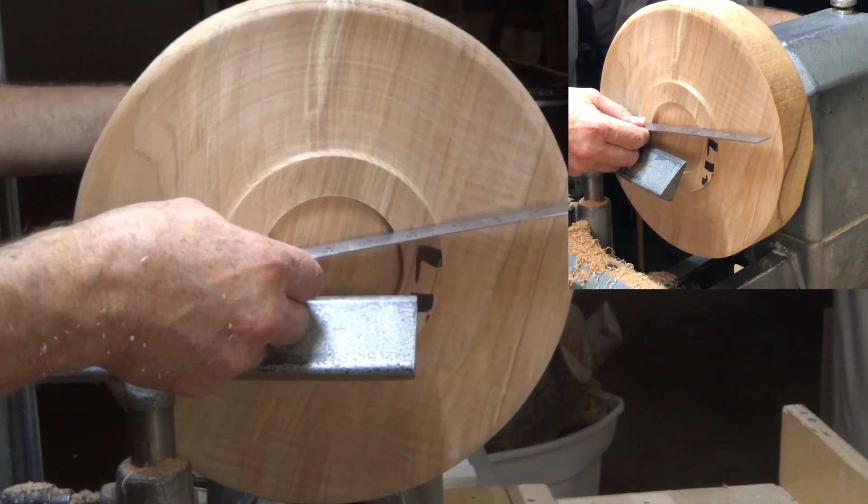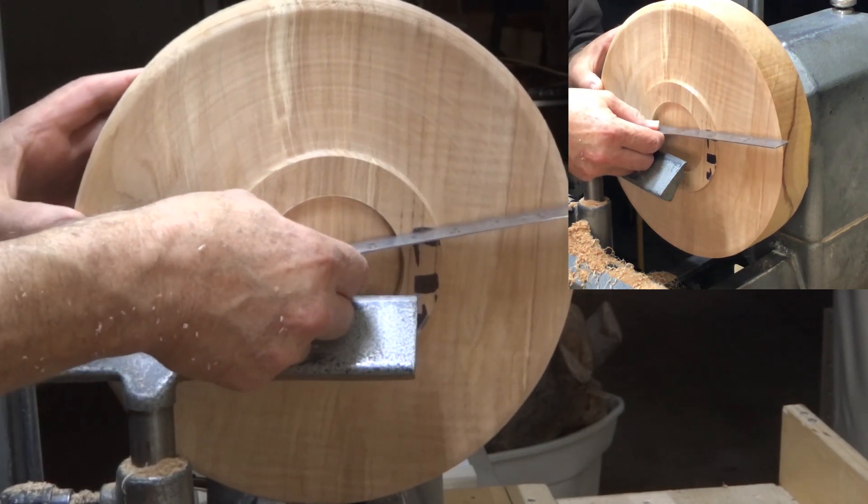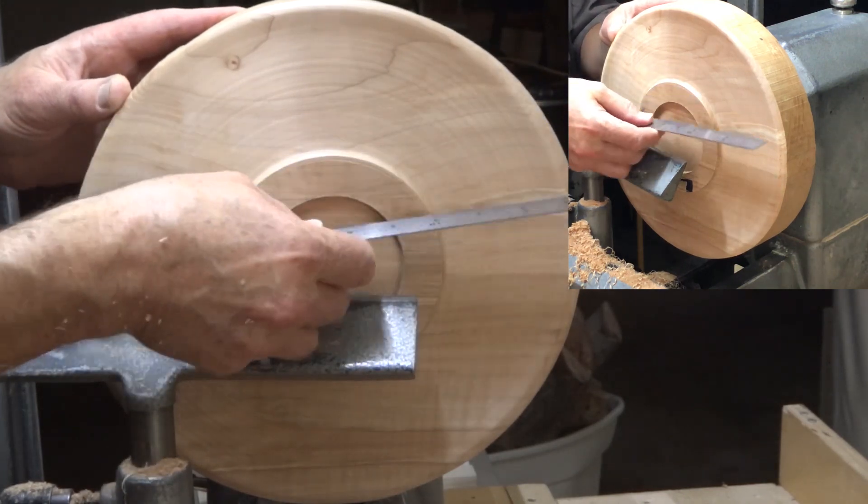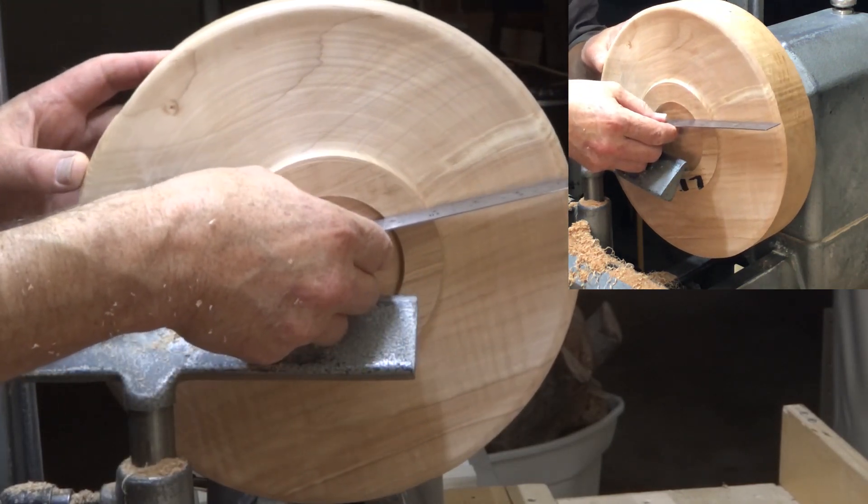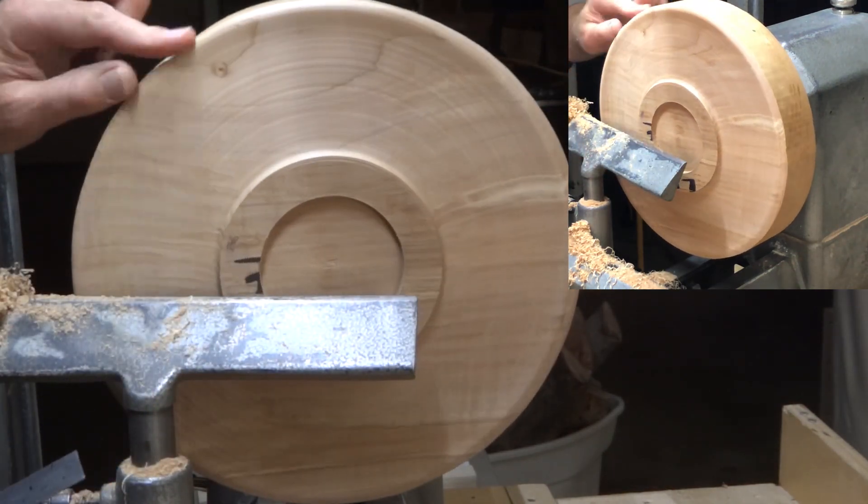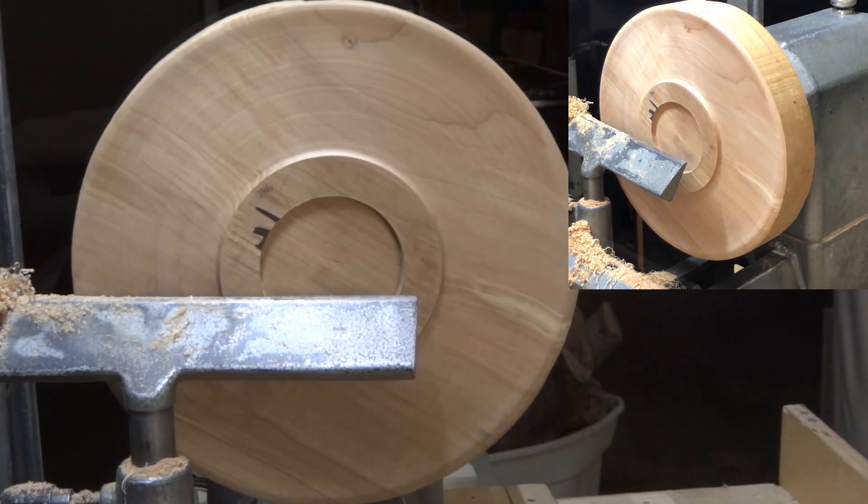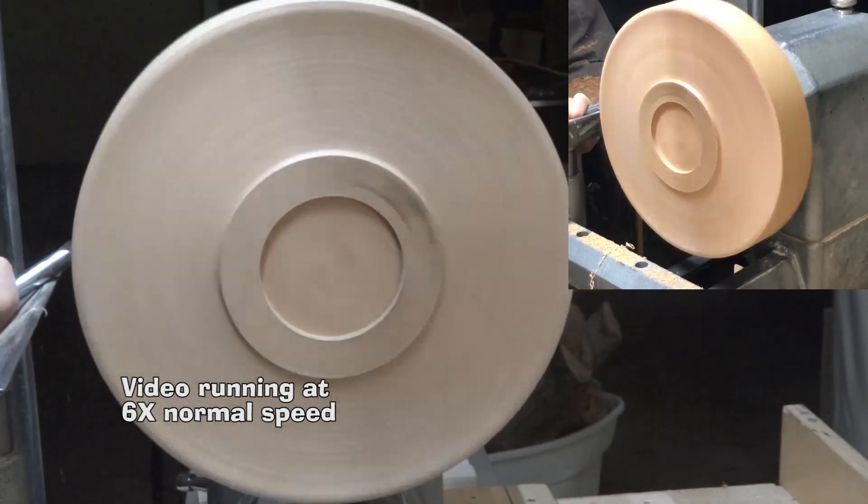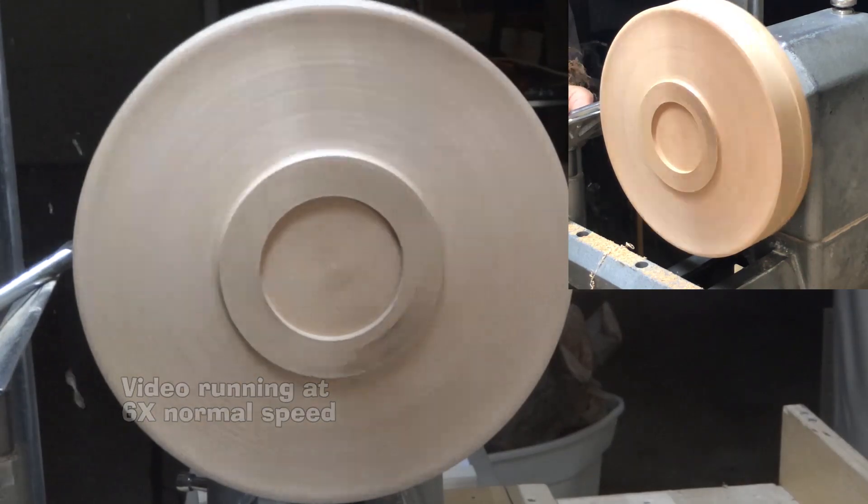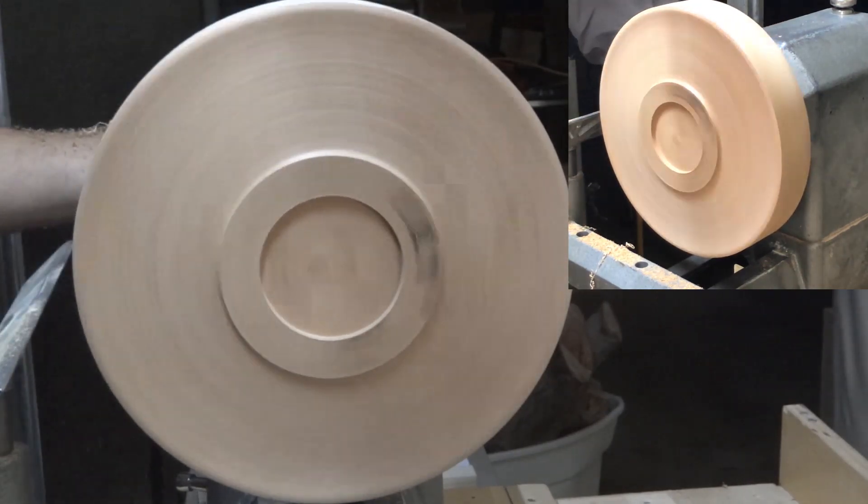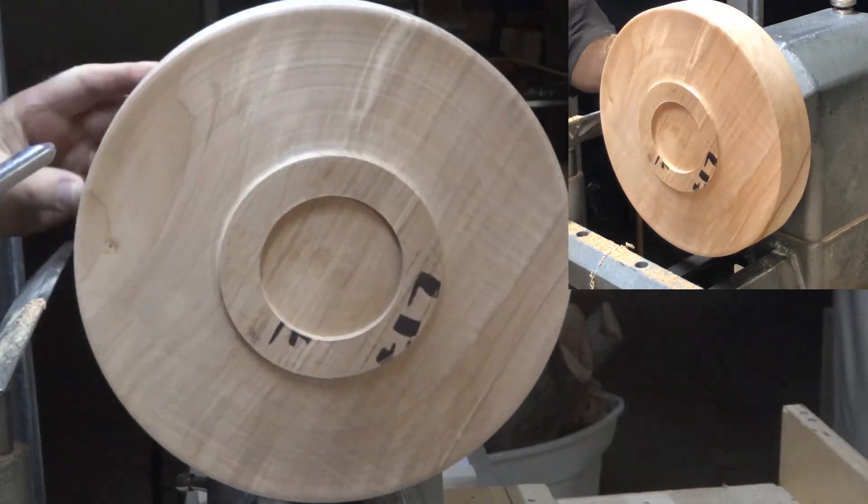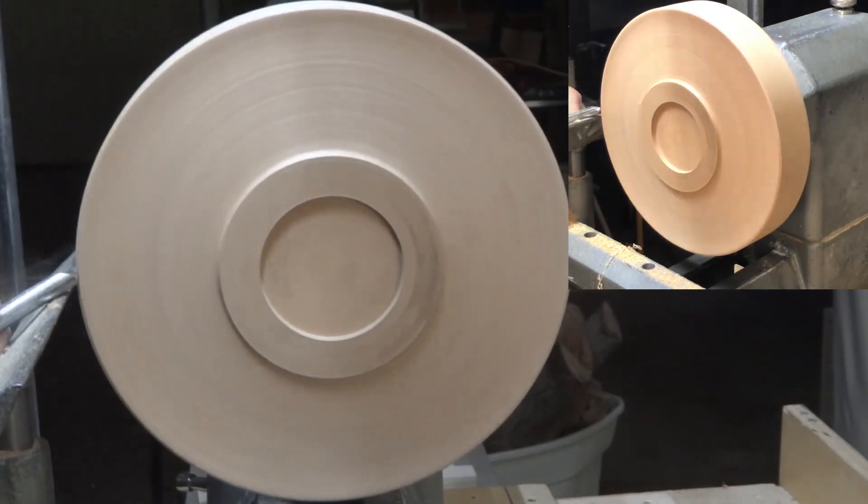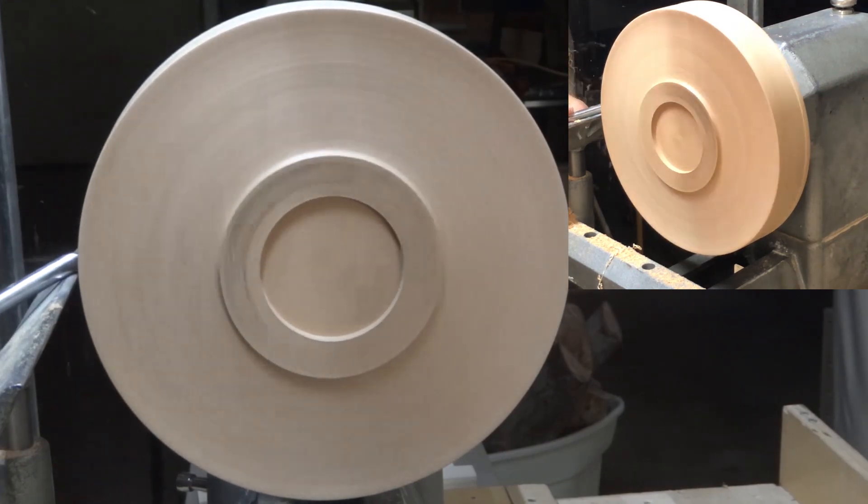I want to look at what kind of space I've got here. I don't want this to be very deep. I want it to sit very close, almost look like it's floating on the table. I think I'm going to go with that. I'm going to just shape up the outside now and sand everything.